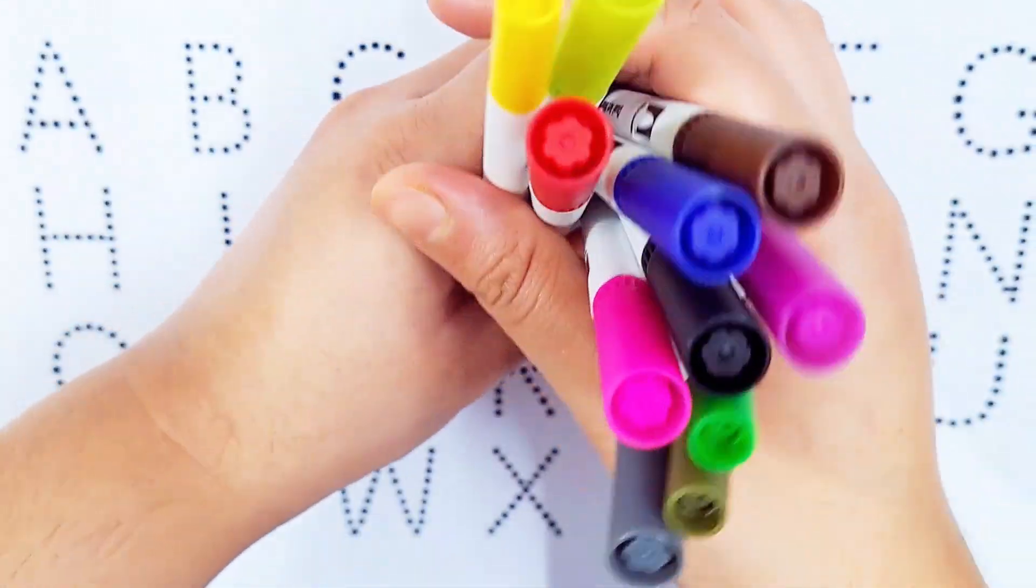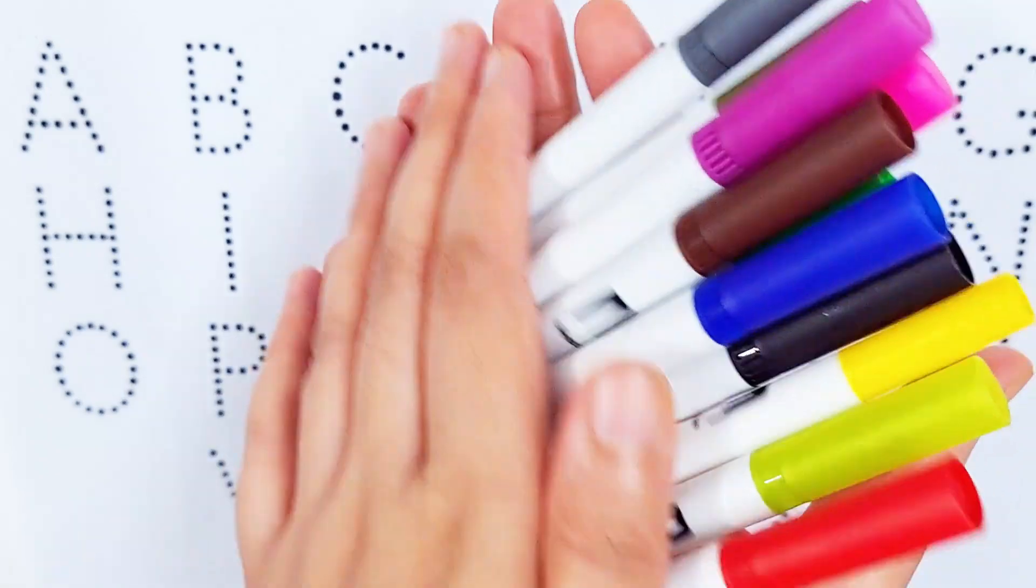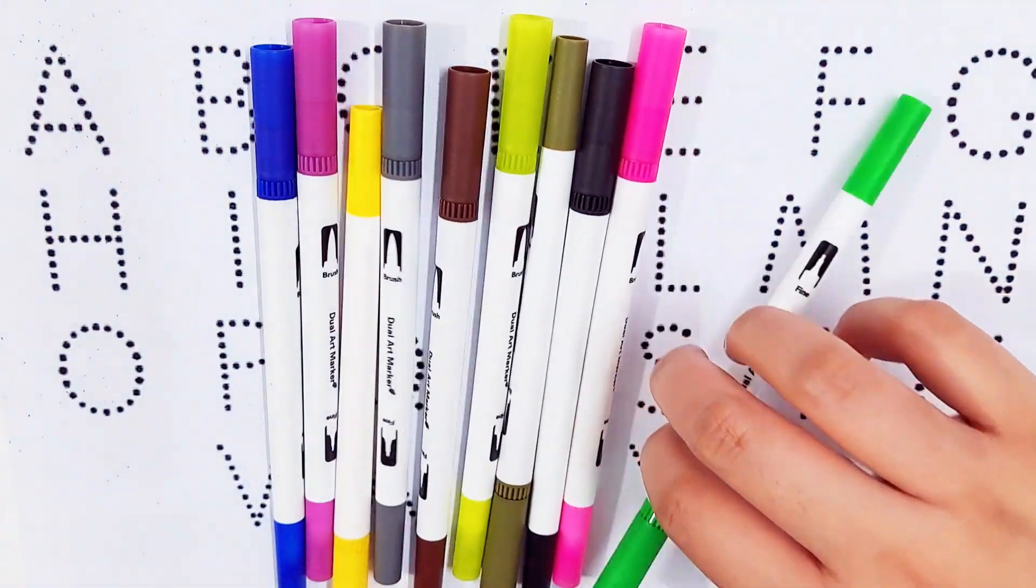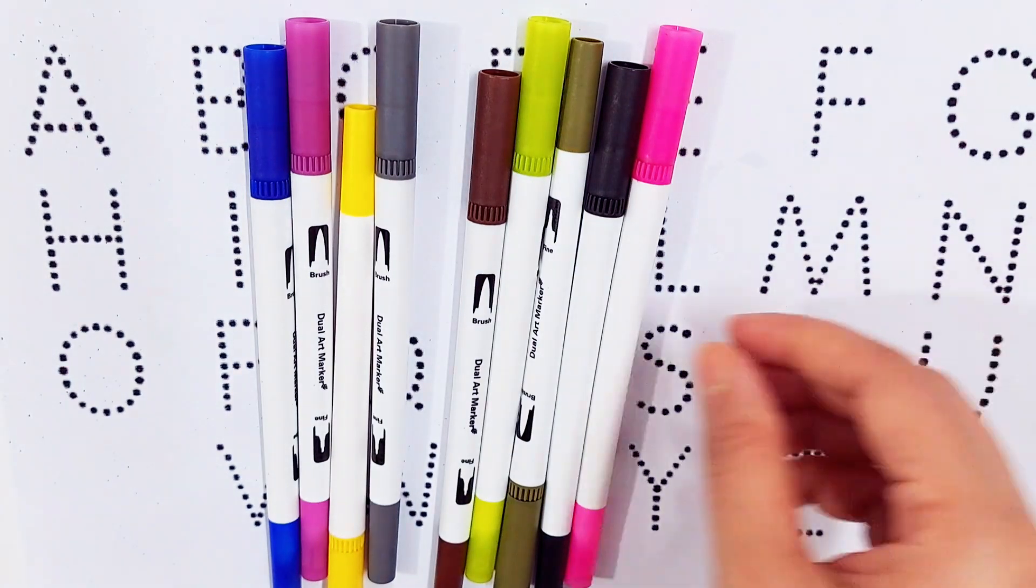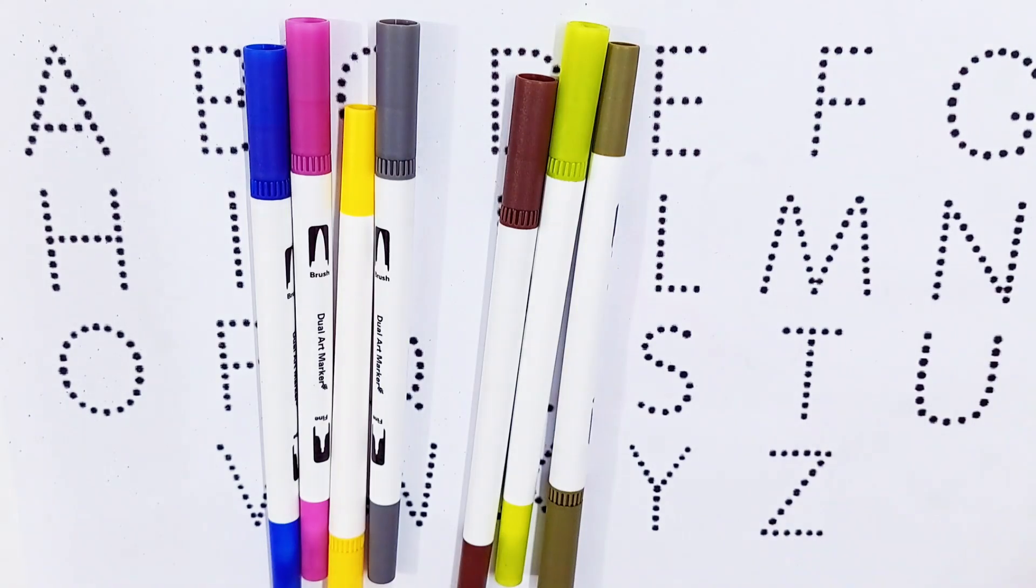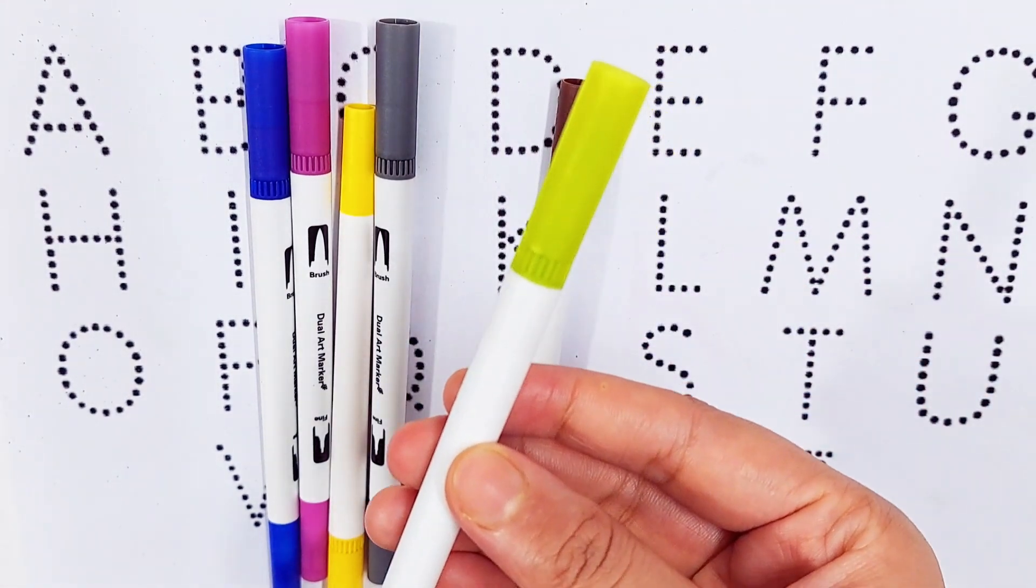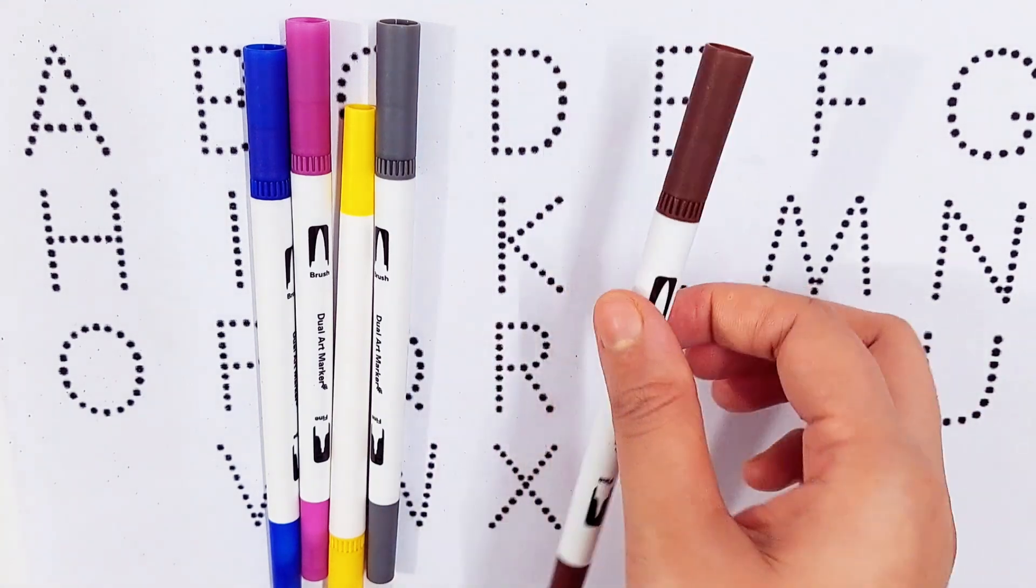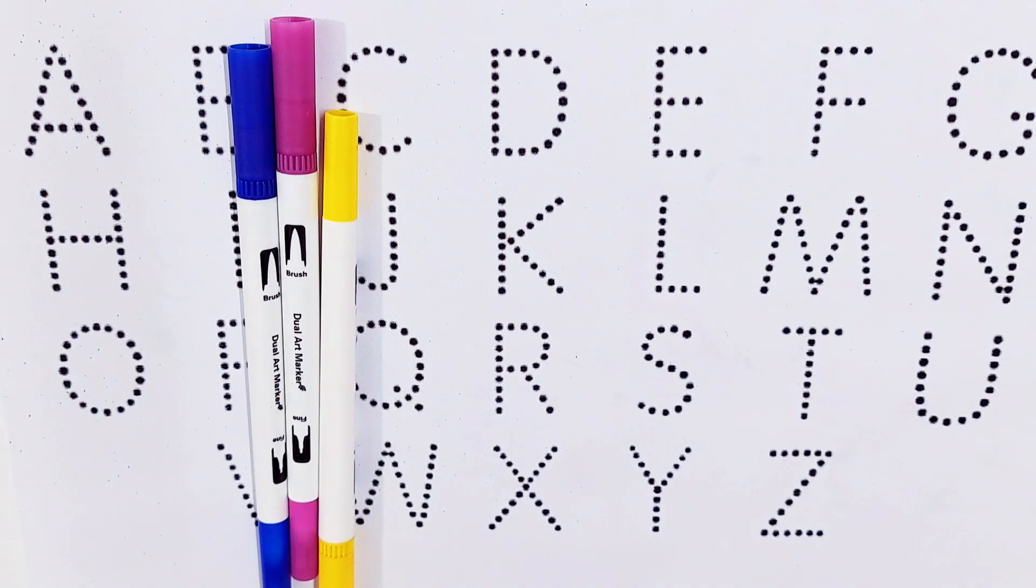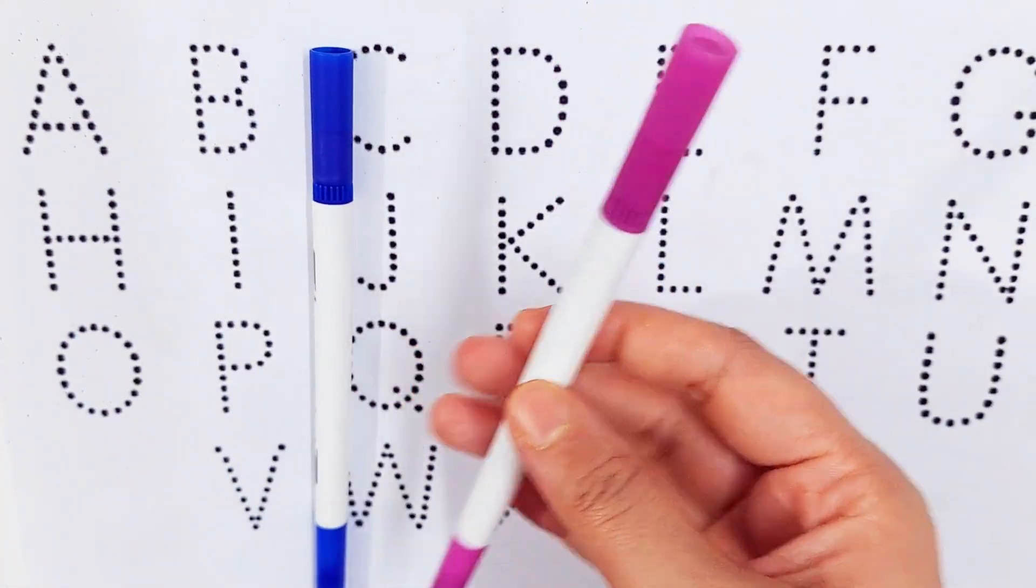Hello guys, let's learn colors names. Red color, green color, purple color, black color, olive color, lime color, brown color, gray color, yellow color, violet color, dark blue color.